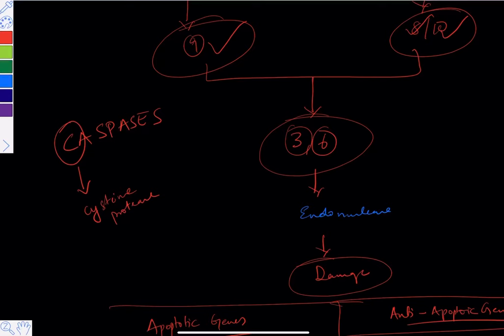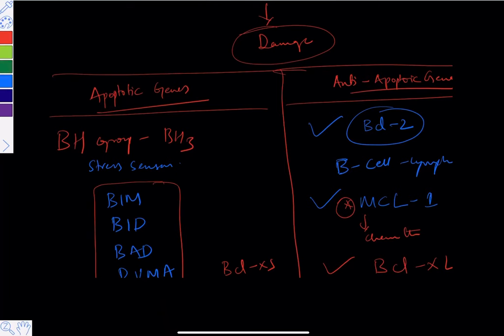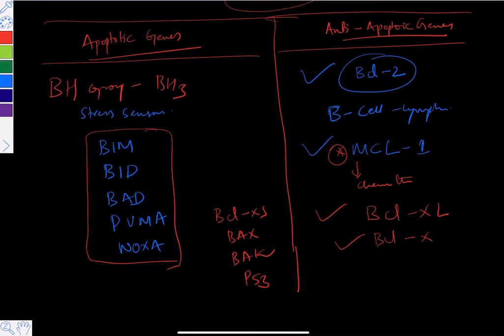C stands for cysteine proteinase, ASP stands for aspartic acid, and ASE stands for enzymes. This etymology was asked as an exam question. Remember the anti-apoptotic and pro-apoptotic gene examples as they are regularly tested. This should be more than sufficient from a dental student's exam perspective; we'll solve MCQs in the rapid-fire evening session.